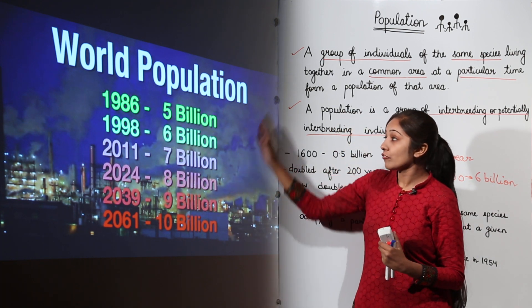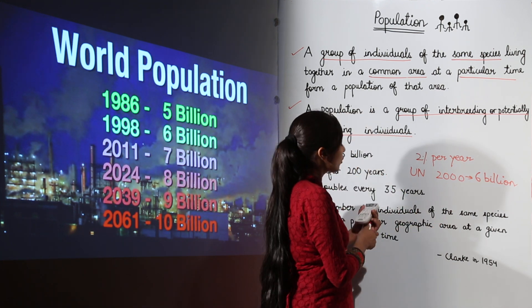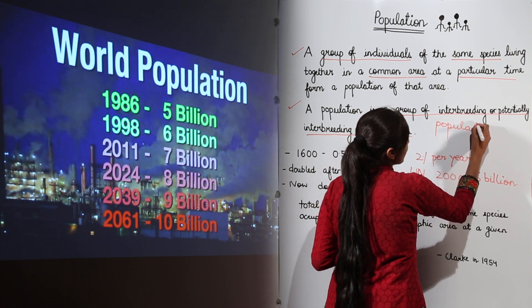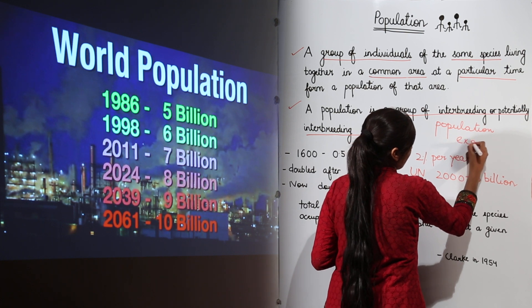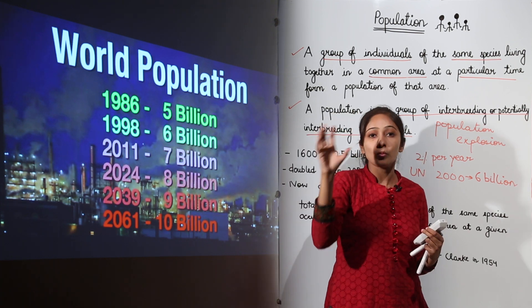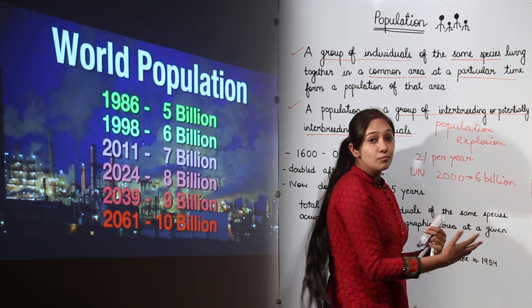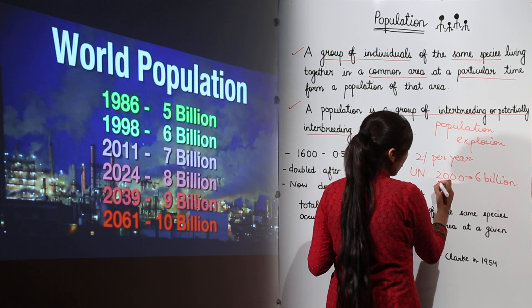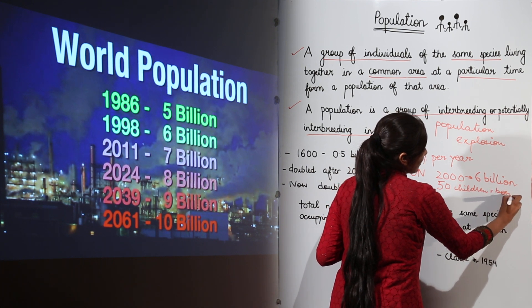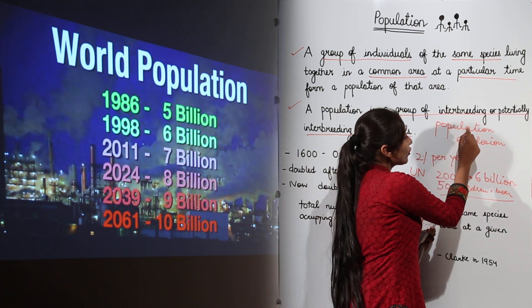When population increases at such a drastic rate, we call it population explosion. It is said that every second, two people are born throughout the world. In India, 50 children are born every minute. This increase in population at such a high rate is known as population explosion.